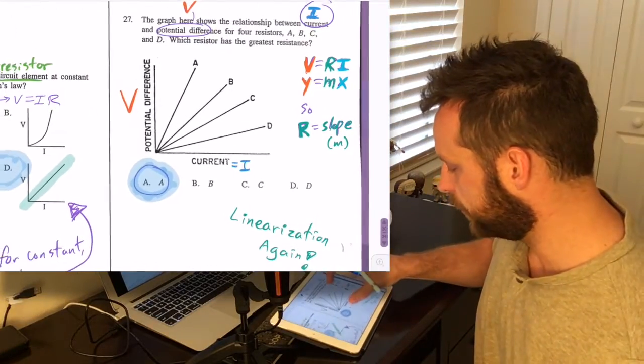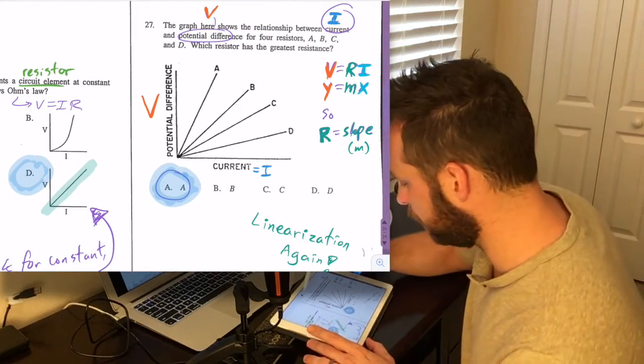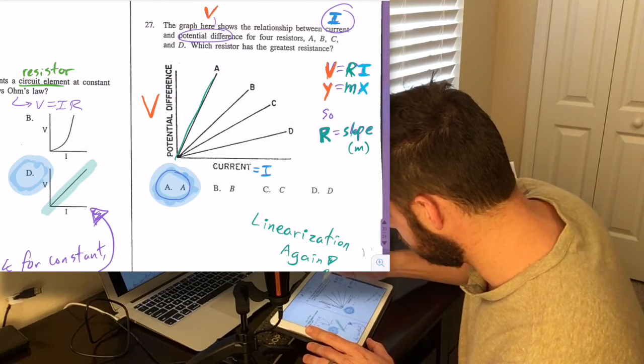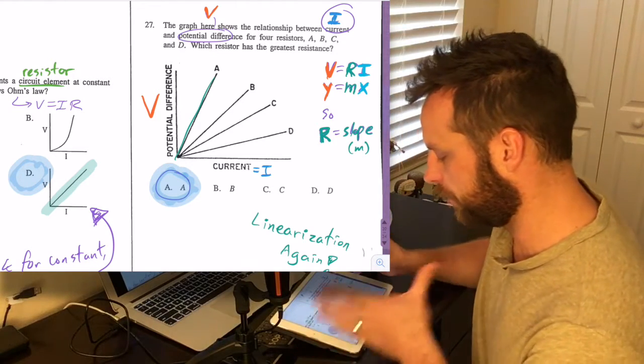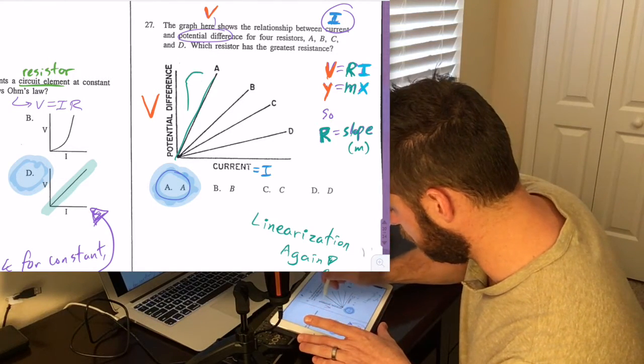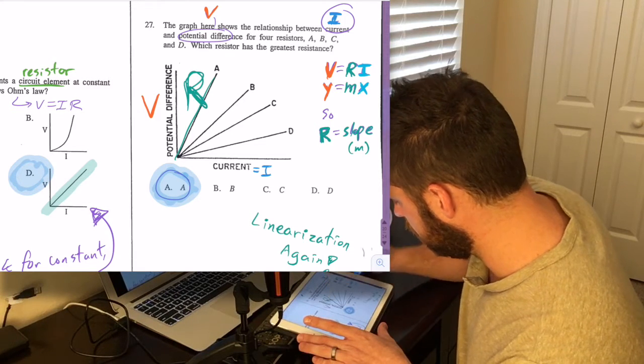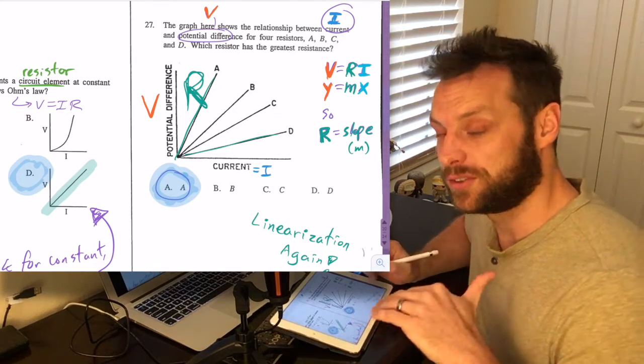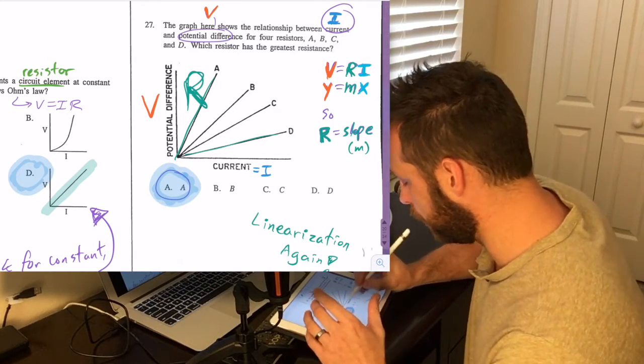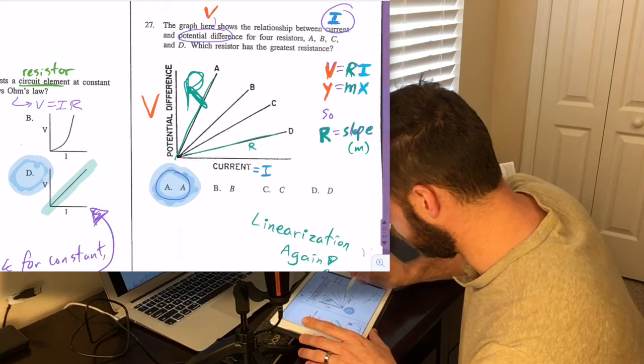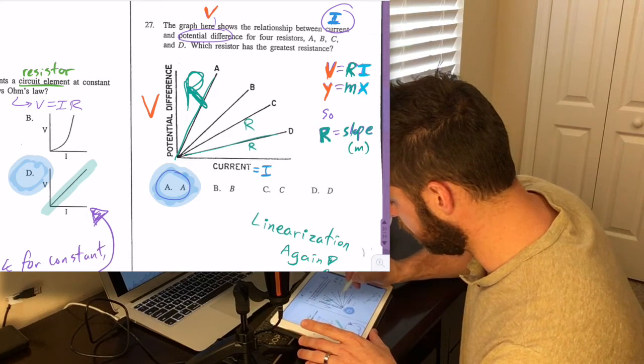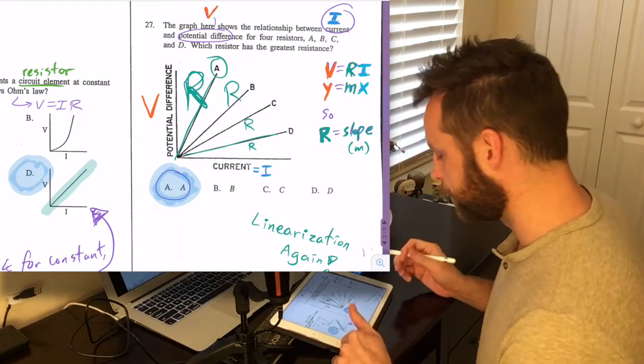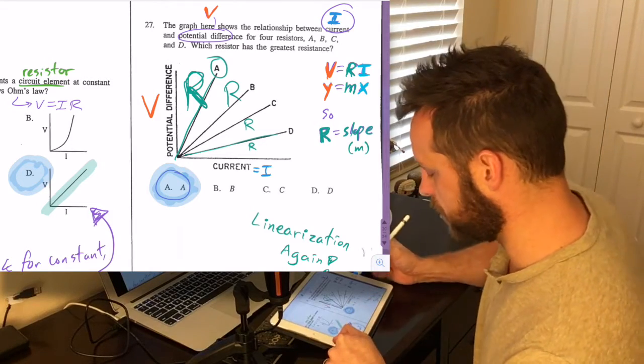Because we're going to see that if we just kind of label this visually here, A has the biggest slope. It's the most rise for the same, for less run. And so we're going to have a big R there, whereas D has the slowest, the smallest slope. And so it's got a lot of run for a little bit of rise, and so it's a little R there. And then these would kind of be like proportionately sized in between. And so A is going to have the largest slope and therefore the largest resistance.